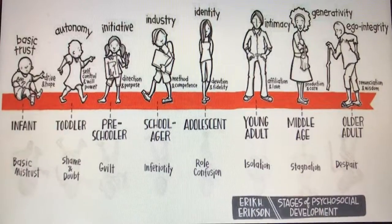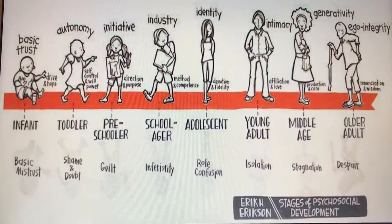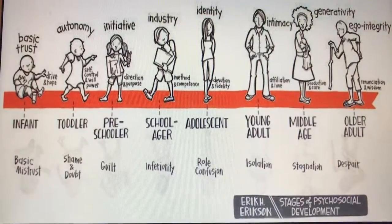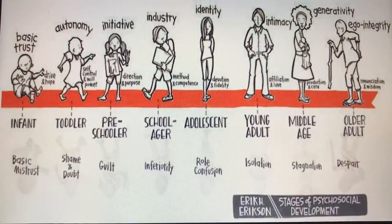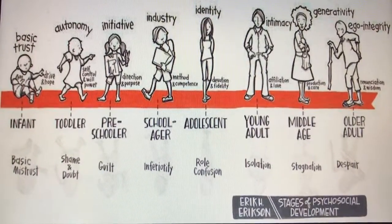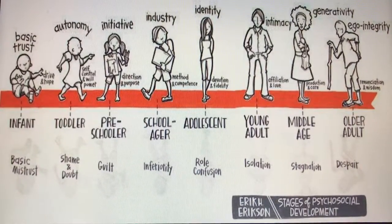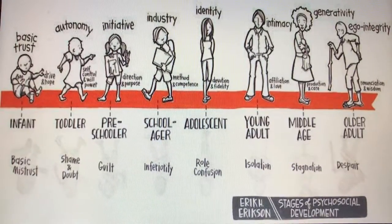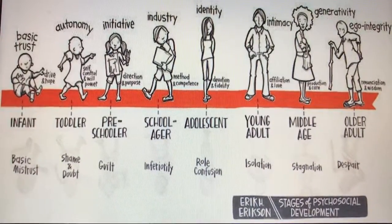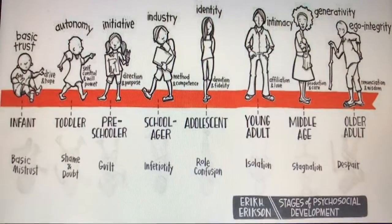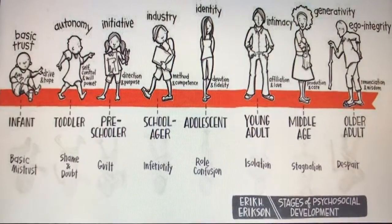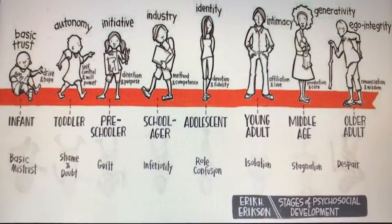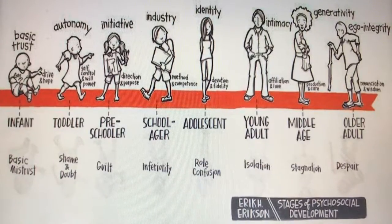The second stage is autonomy versus shame and doubt, which is between the ages of 18 months to 3 years old, considered to be toddlerhood. This is where a child learns what he or she can control and develops a sense of free will and limits. It's a self-control and willpower resolution. Their belief is: I am what I can do.